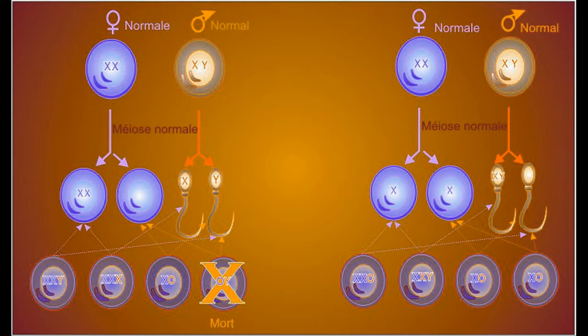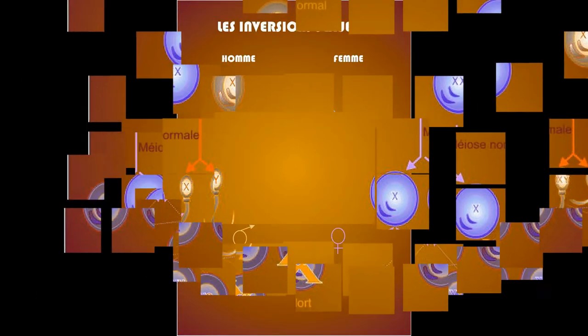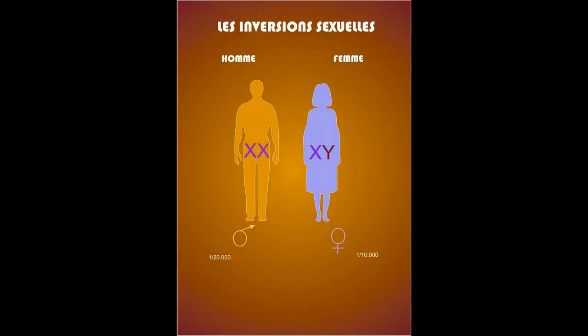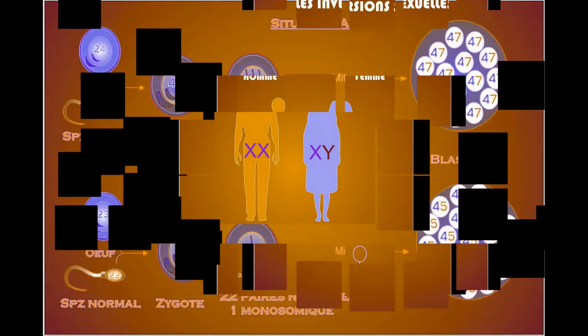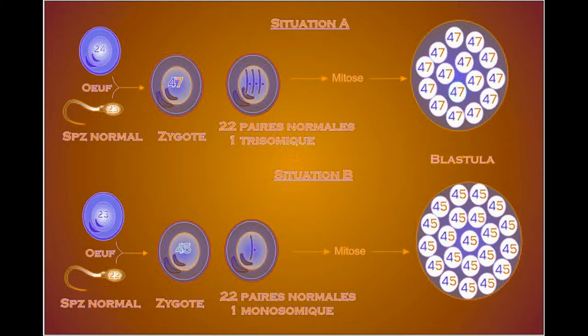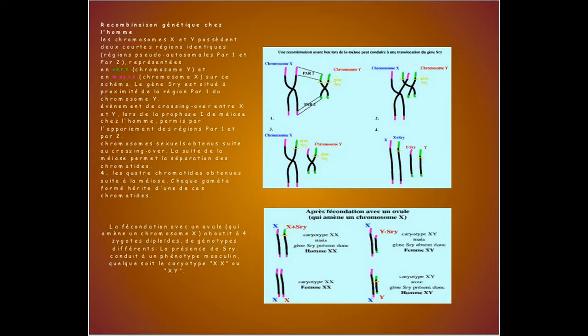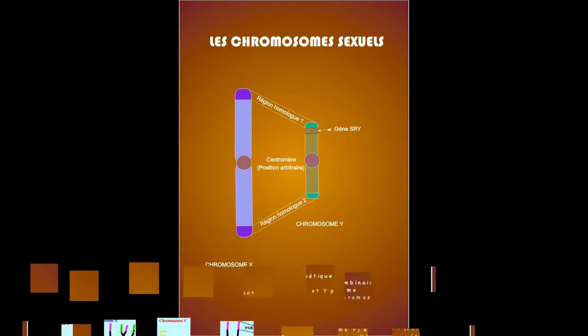Sexual inversions: we observe some rare cases of birth of an intersexed individual presenting a sexual inversion. Their sexual phenotype does not correspond to the sex chromosomes observable in their karyotype. Male XX, one in 20,000 births. Female XY, one in 10,000 births. This phenomenon is explained by events of mutation or translocation.